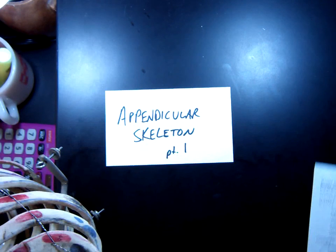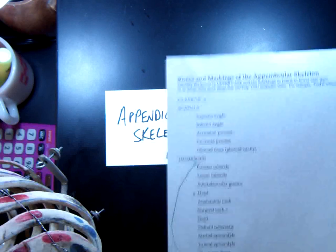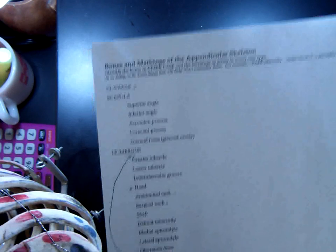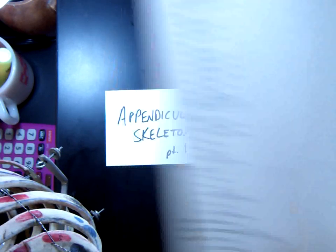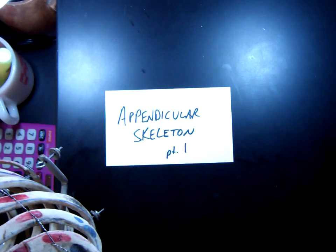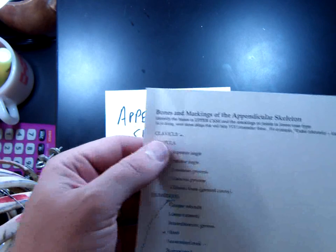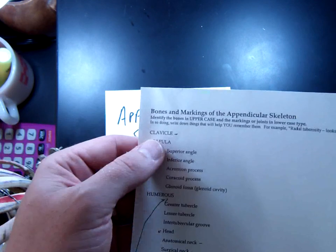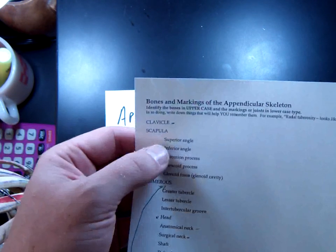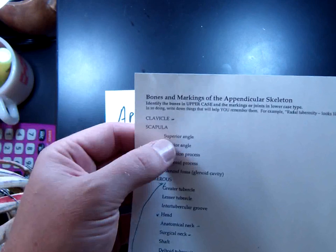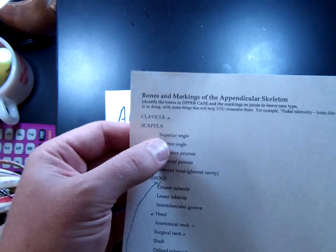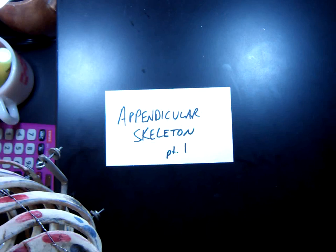The way I've done it in this class is I've given you a sheet that outlines the different parts you need to know on the bones and the markings on those bones. This is not by any means all of them, but on this sheet, in all caps are the bone names, and then with capital and lowercase, indented in, you can see the markings that go with each of those. So let's start at the top.